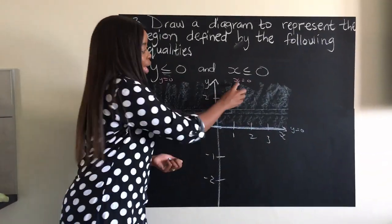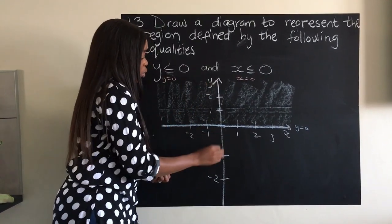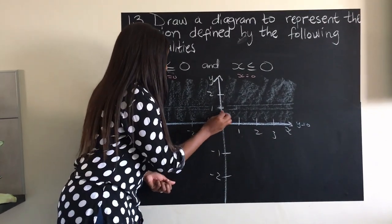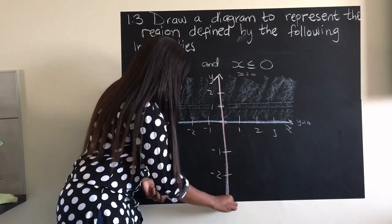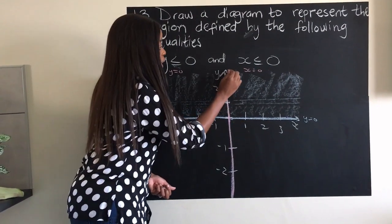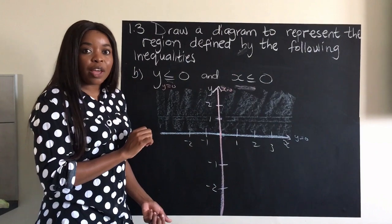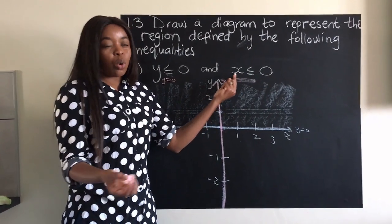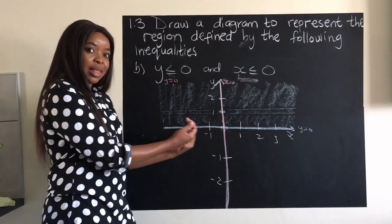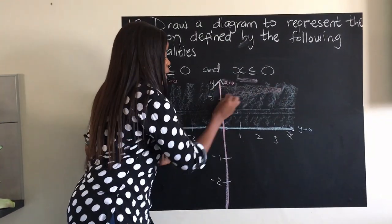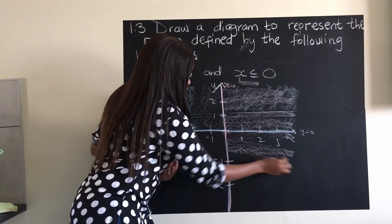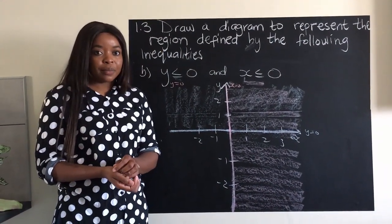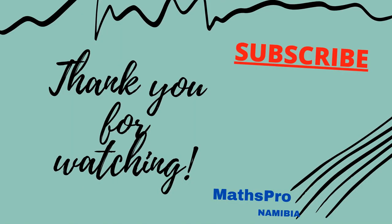Then for x equals zero: with the equal sign involved, draw a solid line — this is actually the y-axis itself. They say x is less than or equal to zero, so values less than or equal to zero are to the left — that's the wanted side. We shade to the right as the unwanted region. Thank you for watching, please subscribe for more videos.